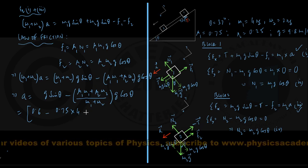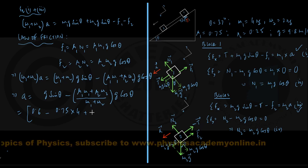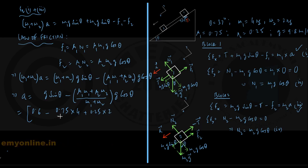it is a ratio, plus mu2, that was given to be 0.25, mass m2 was given to be 2 kg, this thing divided by m1 plus m2, that is 4 plus 2,